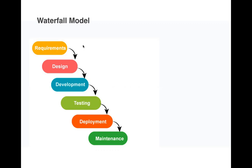Based on those discussions, the architect will prepare a functional specification document. This document is then shared with the client and sign-off is requested. The client verifies everything, and once satisfied, provides sign-off on the functional specification document, after which the design phase begins.